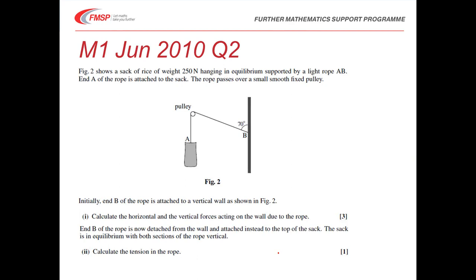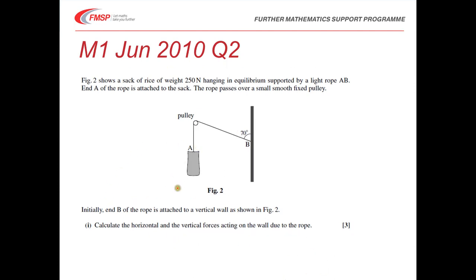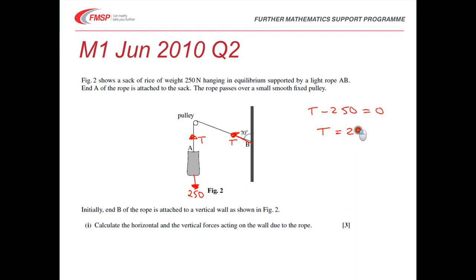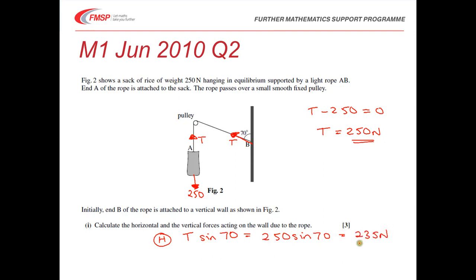Let's look at one more question. We've got a sac of weight 250 newtons — notice that's the weight, not the mass, so we don't multiply by g. We'd have tension running through the string over the smooth pulley, with the same tension acting at the wall. Looking at the sac in equilibrium: T minus 250 equals zero, so T equals 250 newtons. The horizontal component at the wall is T sin 70, which is 250 sin 70, giving 235 newtons to three significant figures.